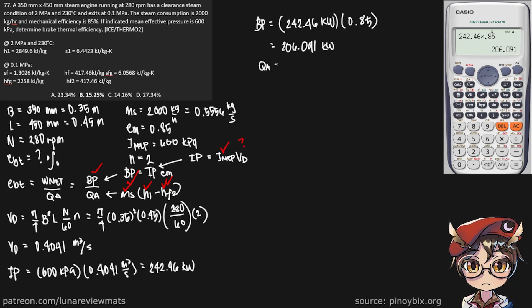So once again, Q sub a is equal to 0.5556 multiplied by the difference in enthalpies, or 17.46 kJ per kilogram. Let's put that in our calculator: 1,351.3.